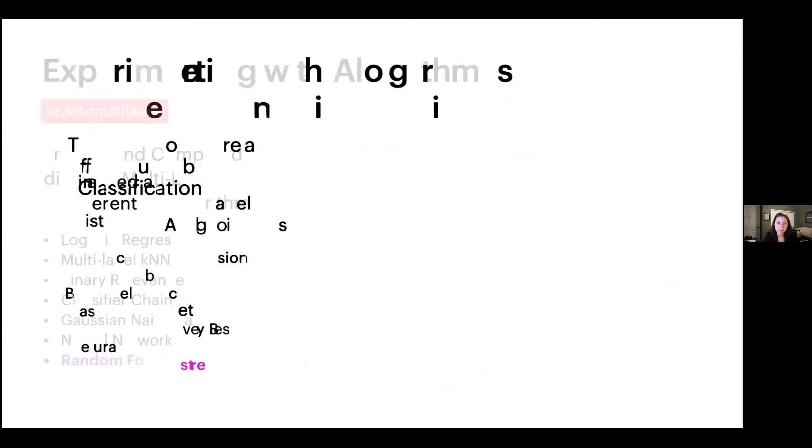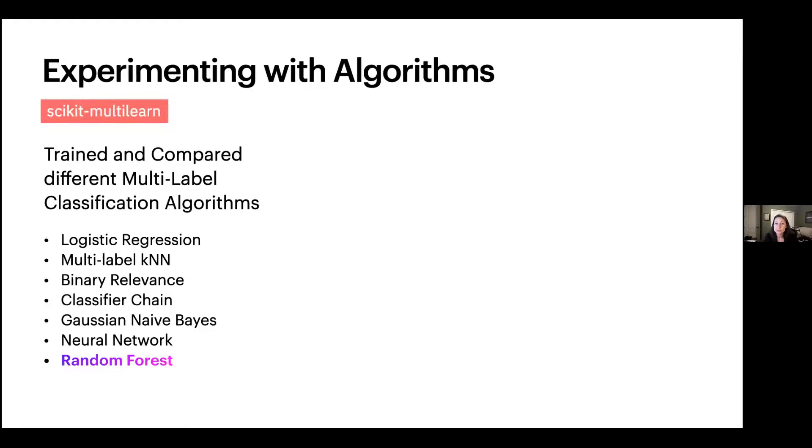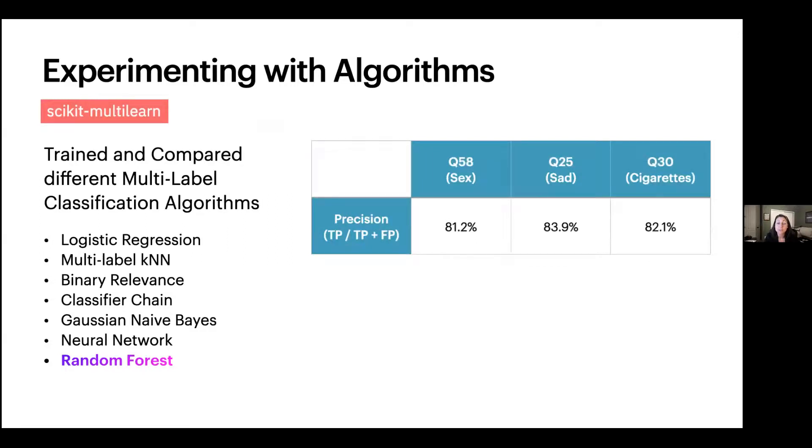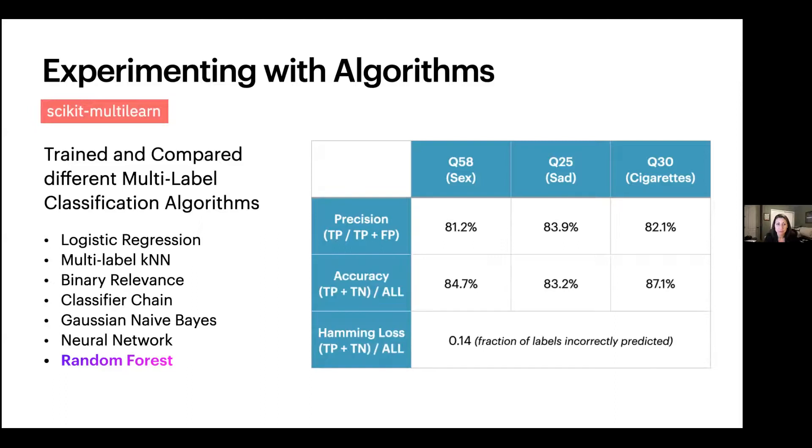So as far as the algorithms, I used a library called scikit multi-learn, and I trained and compared a number of different algorithms to see which would give the best metrics on the ones that we just discussed on the last slide. A random forest algorithm was the best as far as our metrics went. You can see here the precision, which I mentioned is the positive predictive value or how many affirmative answers we were able to capture correctly. We got through the model 81%, 84%, and 82% for each of those questions. So we were able to capture, for example, 84% of the students who reported that they felt sad or hopeless for more than two weeks in a row, which is encouraging. The accuracy and hamming loss were two other metrics that I used to compare these algorithms, both of which report on the fraction of labels that were incorrectly predicted. And the accuracy for each of these three questions in isolation was in the 80s, 80%. And then the hamming loss was just 0.14, which is basically an average of the incorrect responses for each of the three classifications.